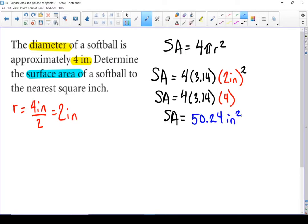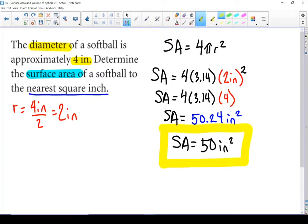When I multiply those together I get 50.24 square inches. My question asks for the nearest square inch. Let's round it off. The surface area of that softball is 50 square inches. There's the answer to my first question.